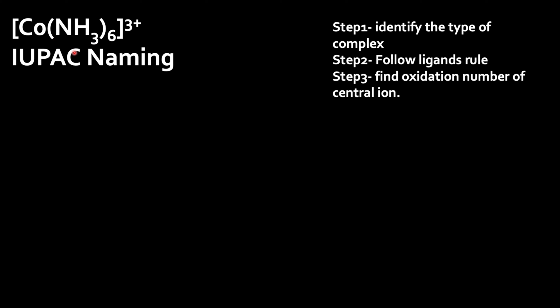Let us discuss IUPAC naming. To write the IUPAC nomenclature we follow some steps. Step 1: identify the type of complex. Step 2: follow the ligand's rule. Step 3: find the oxidation number of the central atom. Looking at this complex ion, it carries a +3 charge, so it is a cationic complex.